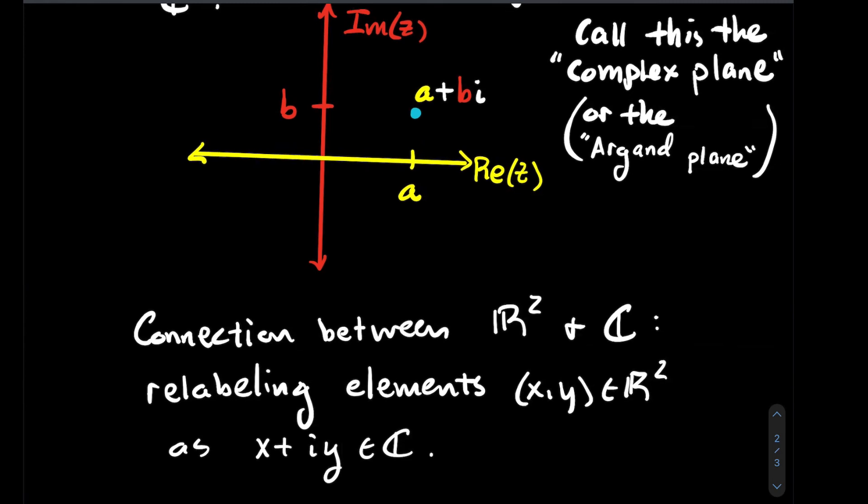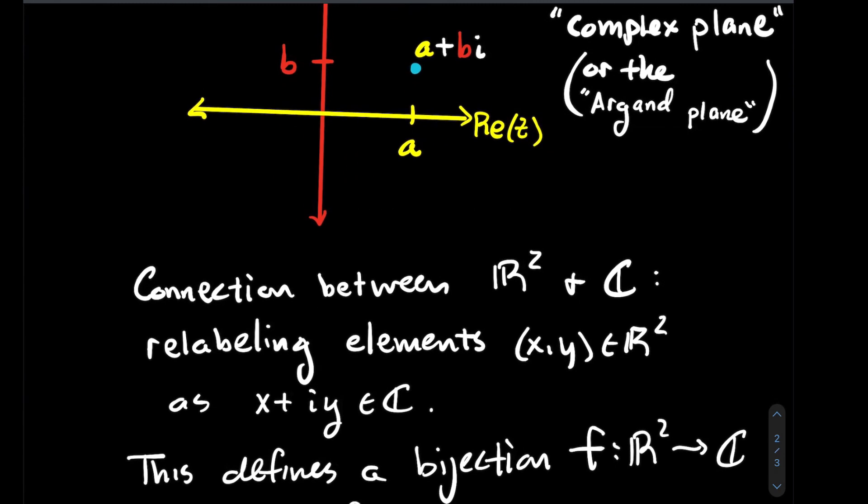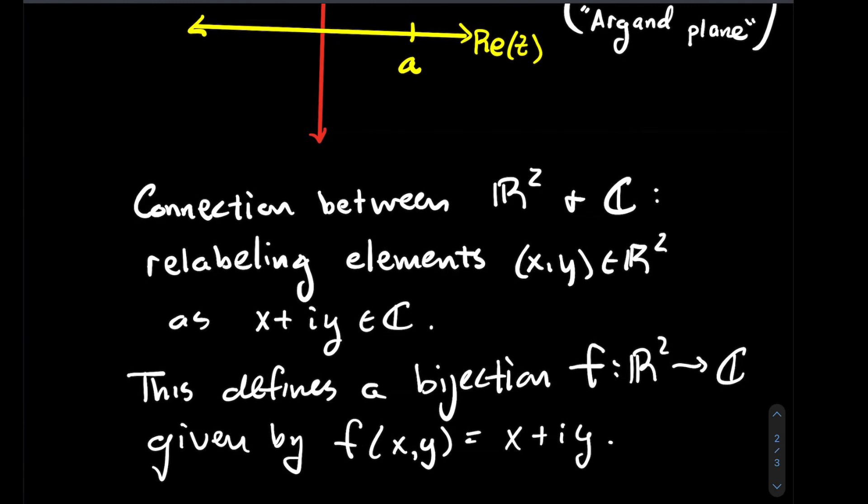How are R2 and the complex numbers related to each other as sets? It's just a matter of relabeling. A more formal way to describe that the two sets are the same up to relabeling is to say there's a bijection between the two.